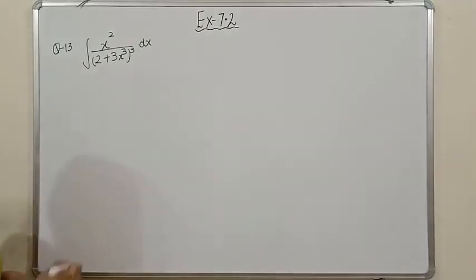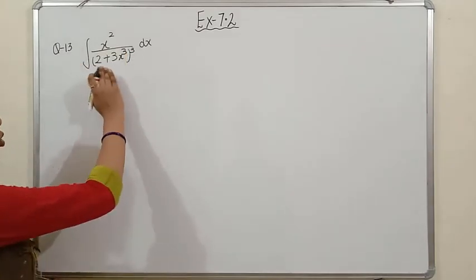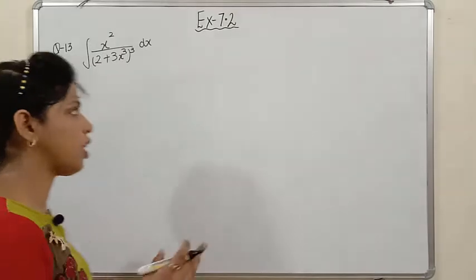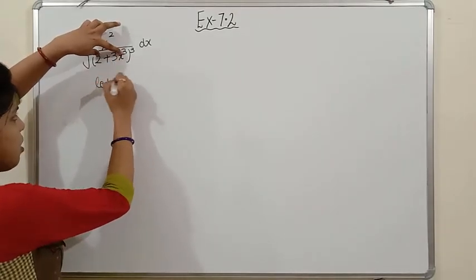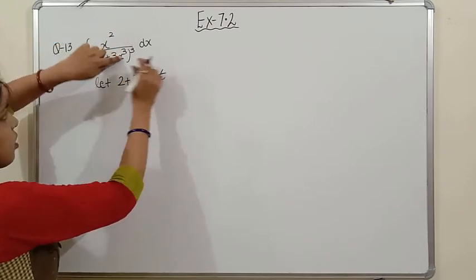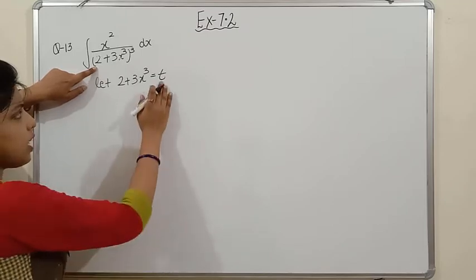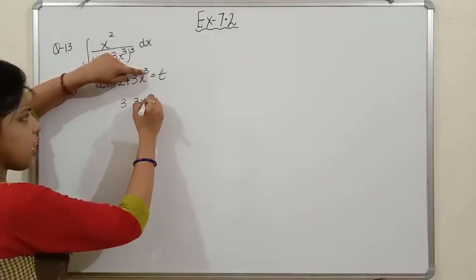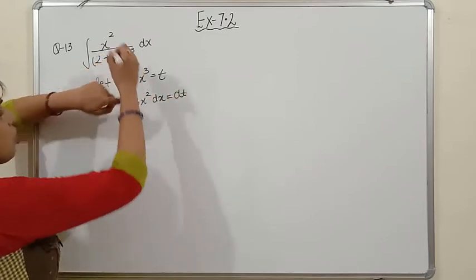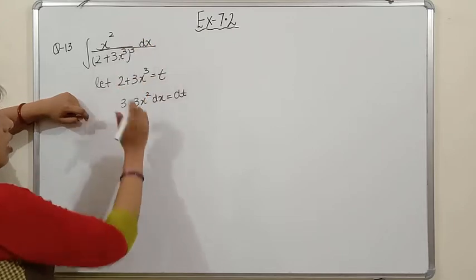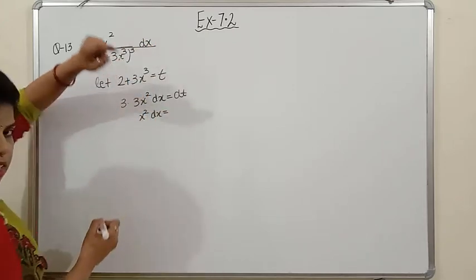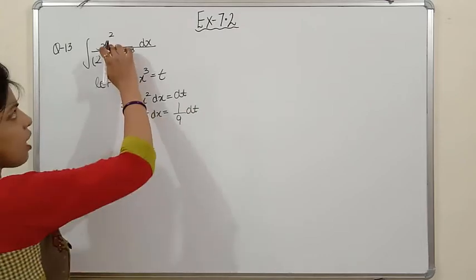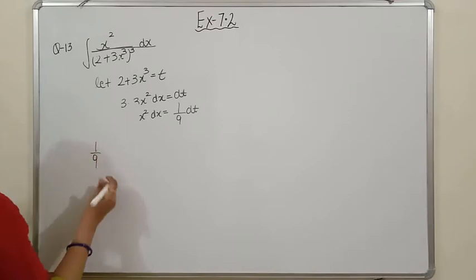Question 13: integration of x²/(2 + 3x³)³ dx. Using the substitution method, first identify the function and its derivative. The function inside the bracket is 2 + 3x³, so let t = 2 + 3x³. Differentiating: the derivative of 2 is 0, and 3 times the derivative of x³ is 3·3x² = 9x², so 9x² dx = dt, which means x² dx = (1/9) dt.